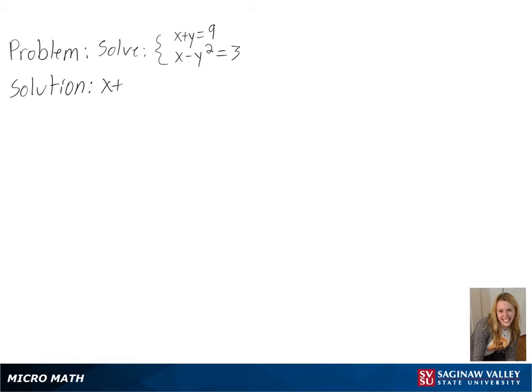Our problem is to solve x + y = 9 and x - y² = 3. To find our variables, we will use substitution. First, we can solve for x.